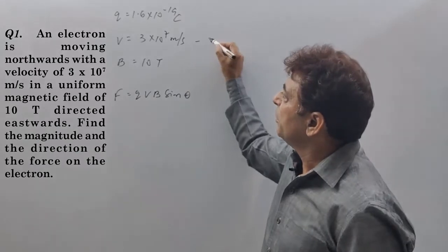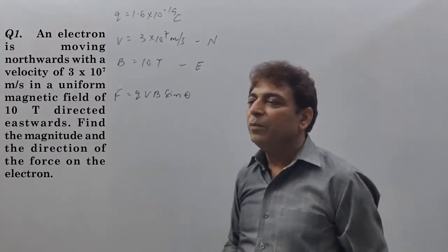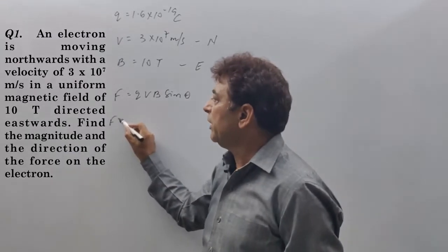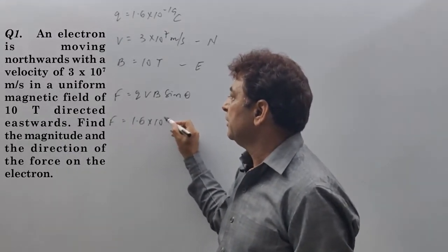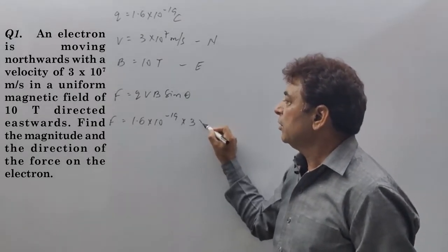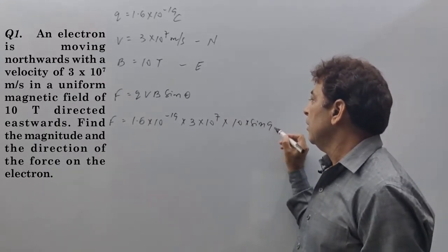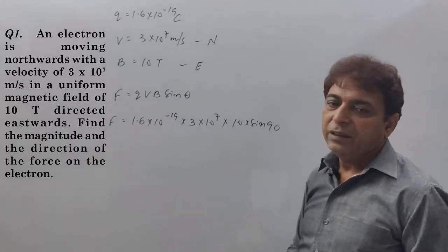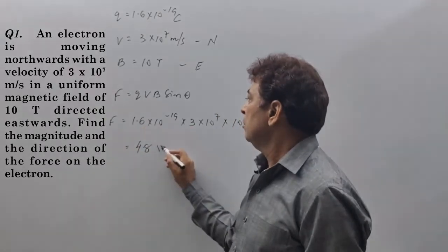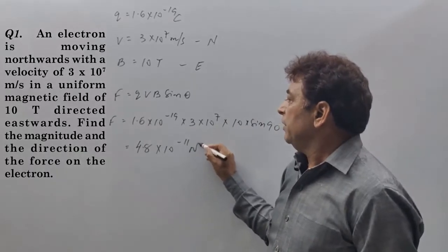The electron is moving towards north and the magnetic field is towards east, so the angle between them is 90 degrees. Calculating: charge is 1.6 × 10⁻¹⁹ coulomb, speed is 3 × 10⁷ m/s, magnetic field is 10 tesla, and sin 90° = 1. The force comes out to be 4.8 × 10⁻¹¹ newton.